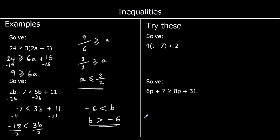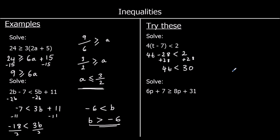The first one: 4(t − 7) < 2. I'll expand the bracket: 4t − 28 < 2. Then adding 28 to both sides gives 4t < 30. Dividing both sides by 4 gives t < 30/4. Halving top and bottom gives 15/2, which you could also write as 7.5.